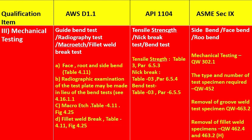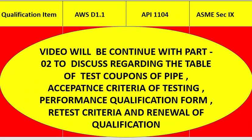These are the minimum requirements for welder qualification. The next video — Part 2 — will continue with the table of test coupon for pipe, acceptance criteria of testing, performance qualification form, expiry criteria, and renewal of qualification.